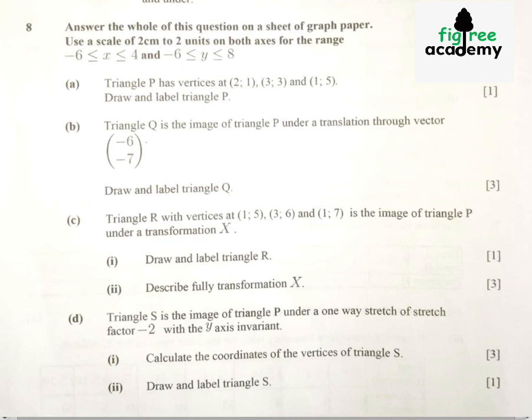But before we draw, we need to identify the shape matrix. The shape matrix is here. We just take the vertices 2 and 1, we align them, then 3 and 3, we align them, 1 and 5 we align them. So this is the triangle matrix we derived from the given vertices.